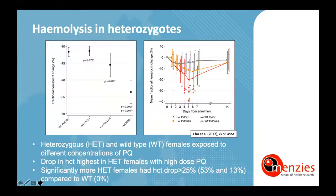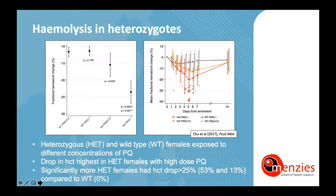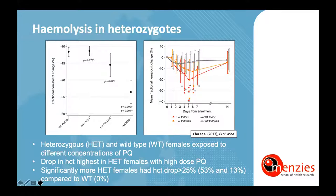Regarding heterozygous females, Chu et al. in 2017 enrolled 34 heterozygous females and G6PD normal females treated with either high-dose primaquine over 7 days or a 14-day treatment course. None of the normal females had a clinically relevant hematocrit drop above 25%. In contrast, 12% of heterozygous females receiving 14-day treatment had a clinically relevant reduction, and 53% of those receiving 1 mg/kg over 7 days had such a reduction, with 2 females requiring blood transfusion.